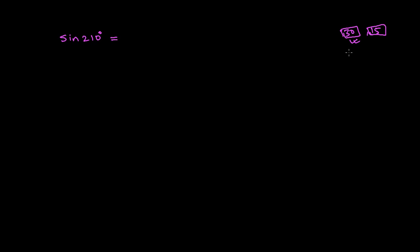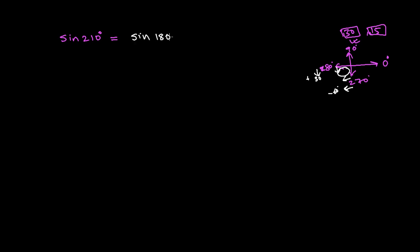Suppose we need to find sine 210 degrees. First, I'll draw a rough diagram: this is the 0° line, 90° line, 180° line, and 270° line. From this, I can confirm 210 is above 180 but below 270, meaning it's in the third quadrant. I can write this as sine(180 + 30)° or sine(270 − 60)°.